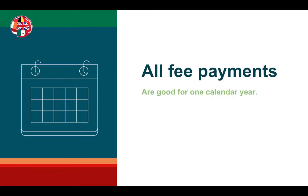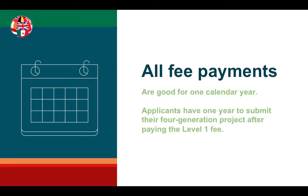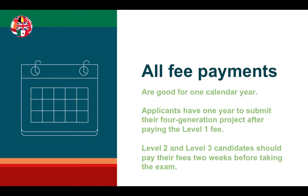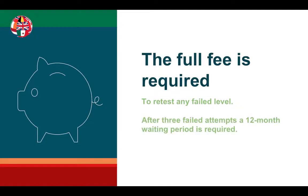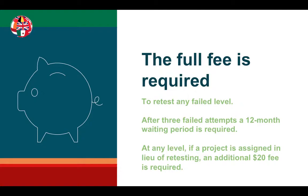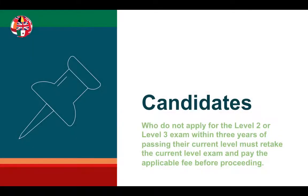All fee payments are good for one calendar year. Applicants have one year to submit their four-generation project after paying the Level 1 fee, and Level 2 and Level 3 candidates should pay their fees about two weeks before taking their exam. The full fee is required to retest any failed level. After three failed attempts, a 12-month waiting period is required. If a project is assigned in lieu of retesting at any level, an additional $20 fee is required. Candidates who do not apply for the Level 2 or Level 3 exam within three years of passing their current level must retake the current level exam and pay the applicable fee before proceeding.